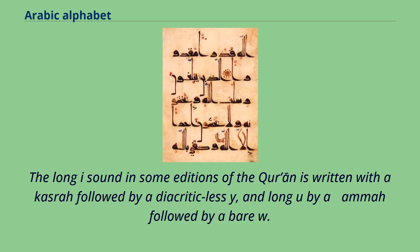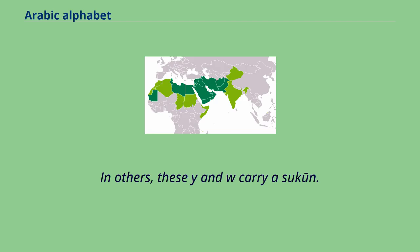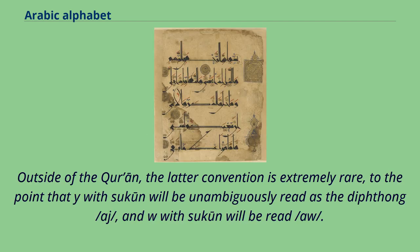The long 'i' sound in some editions of the Quran is written with a kasra followed by a diacriticless ya, and long 'u' by a damma followed by a bare waw. In others, these ya and waw carry a sukun. Outside of the Quran, the latter convention is extremely rare, to the point that ya with sukun will be unambiguously read as the diphthong 'aj', and waw with sukun will be read as 'aw'.